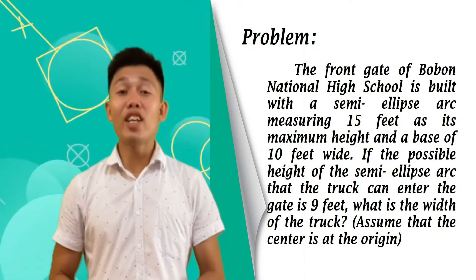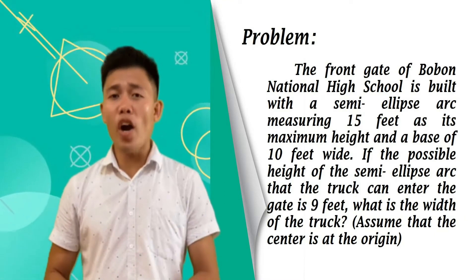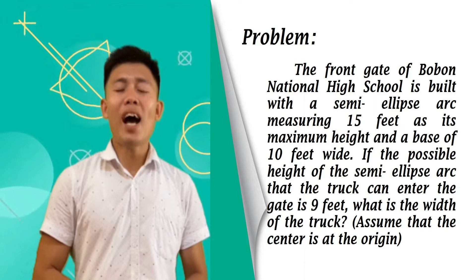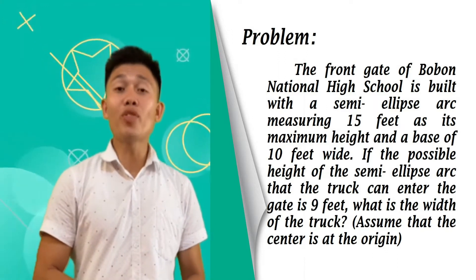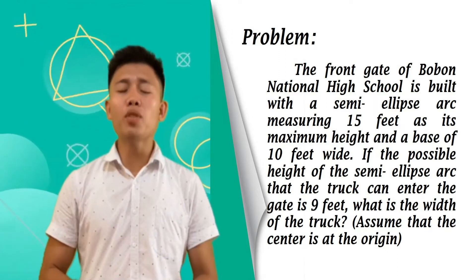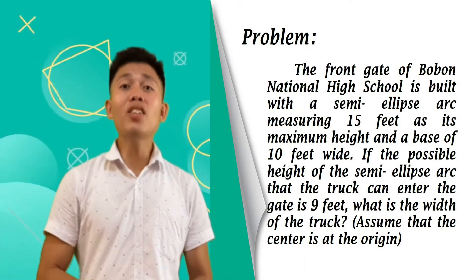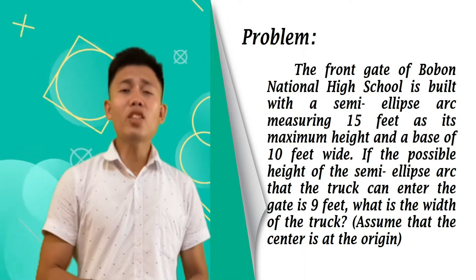The front gate of Bobon National High School is built with a semi-ellipse arc measuring 15 feet as its maximum height and a base of 10 feet wide. If the possible height of the semi-ellipse arc that the truck can enter the gate is 9 feet, what is the width of the truck?